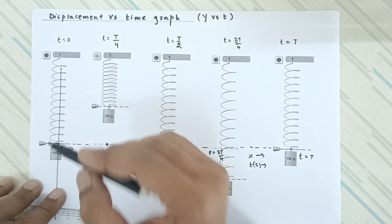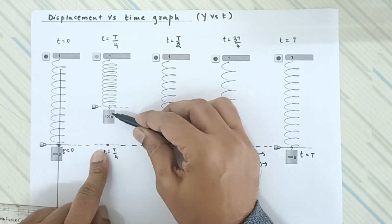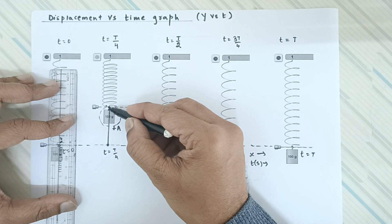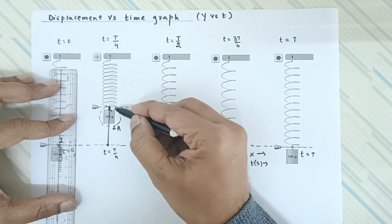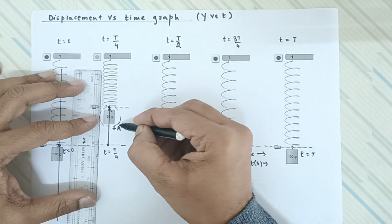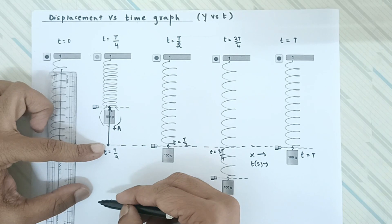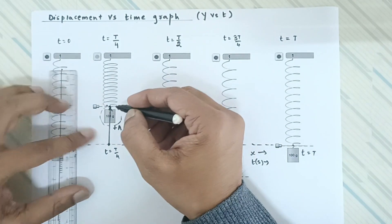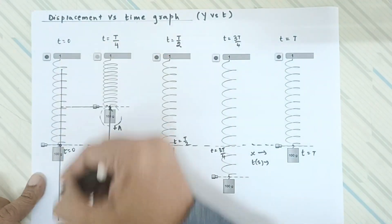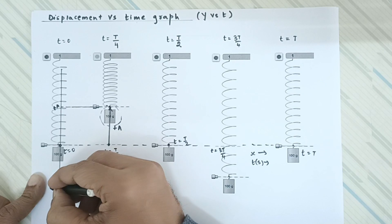Displacement is always measured from the mean position. I will consider the hook attached to the mass as the reference point. The maximum distance above the mean position is called +a, because displacement in the upward direction is positive. Displacement in the downward direction is negative, since displacement is a vector quantity. This maximum value of displacement is called the amplitude. So on the y-axis, +a is above and -a is below the mean position.